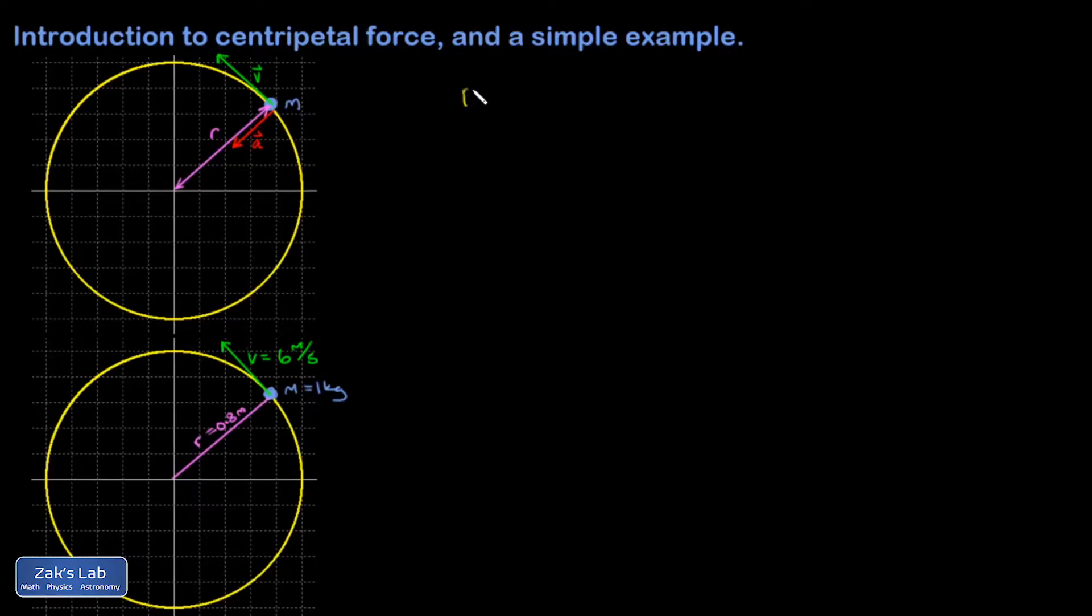So I'm going to write down F_net equals mA. And in order to have an acceleration pointing directly to the center of curvature, I know for sure the net force has to point directly to the center of curvature.